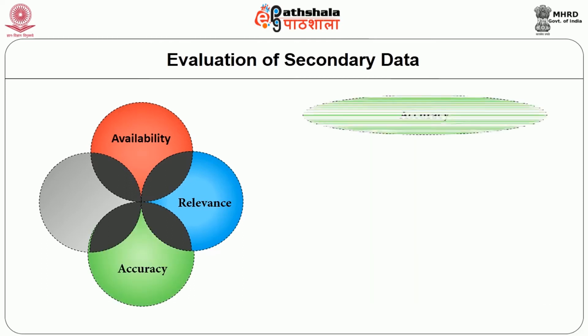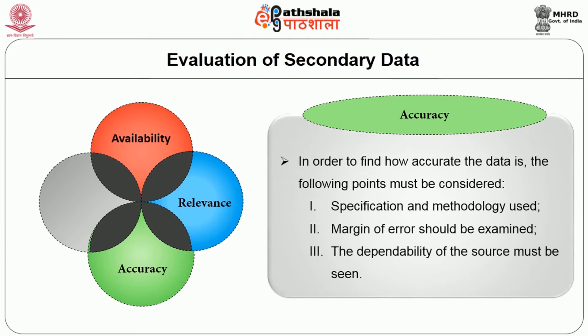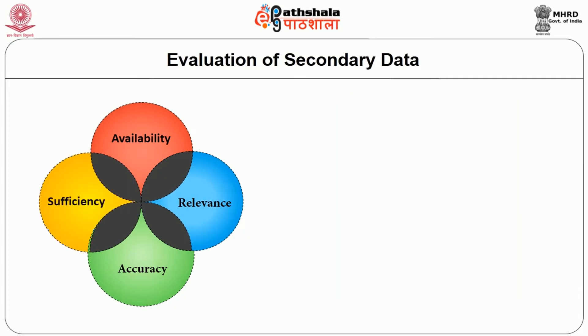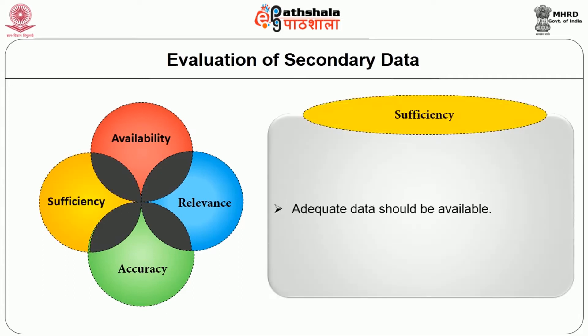Fourth, sufficiency — adequate data should be available. Now, let us pass on to the application of published sources of secondary data. Secondary data represents a vast resource to sociologists. It is easy and free to use. It can include information about very large populations that would be expensive and difficult to obtain. Secondary data is available from time periods other than the present day. It is literally impossible to conduct primary research about events, attitudes, styles or norms that are no longer present in today's world.